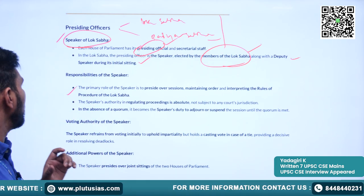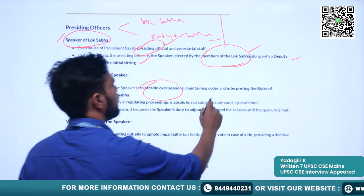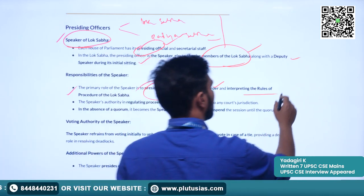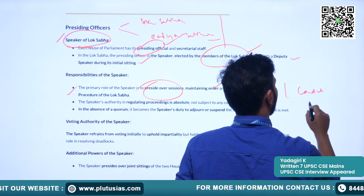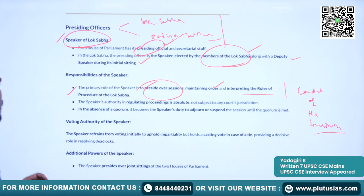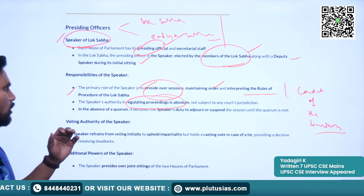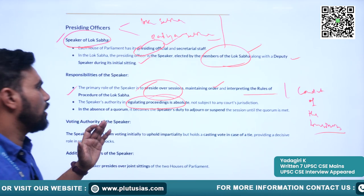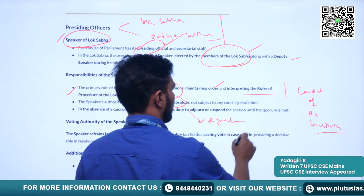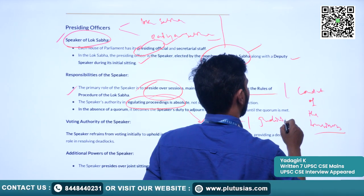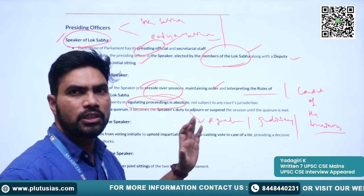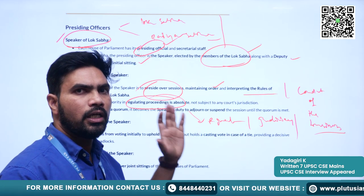We will understand the responsibilities of the speaker. He presides over the sessions, maintaining order and interpreting the rules and procedure of the Lok Sabha. He oversees the conduct of business — this is his primary responsibility. The speaker's authority in regulating procedures is absolute; he is the final authority. This overseeing is out of the jurisdiction of the judiciary — the judiciary cannot interfere in the affairs of the Lok Sabha or the entire legislative process.